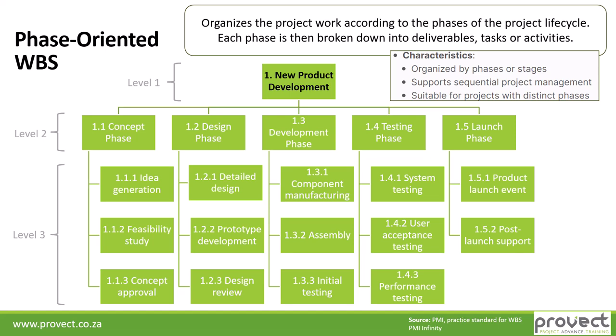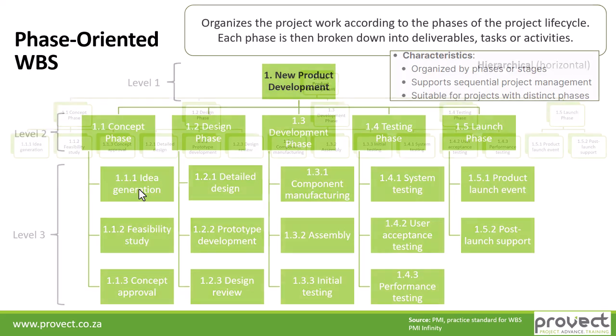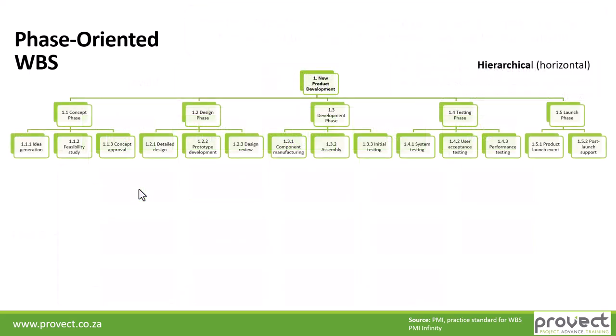In this work breakdown structure you can see that the third level is represented vertically. This is mostly done when you've got a large type of project and you need to easily visually represent your work breakdown structure. The same work breakdown structure can also be presented in a horizontal hierarchical format, where level 3 is represented horizontally.